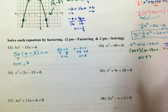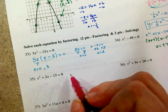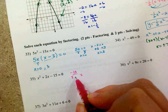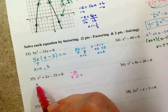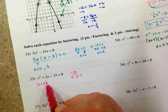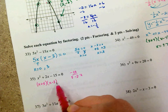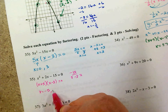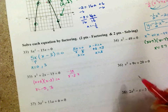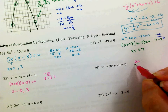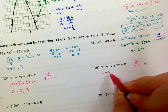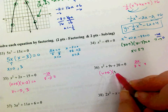For x² + 2x − 15, find factors of negative 15 that add to 2: those are 5 and negative 3. So (x + 5)(x − 3) = 0, giving x = negative 5 and x = positive 3. For v² + 9v + 20, factors of 20 that add to 9 are 5 and 4. So (v + 5)(v + 4) = 0, giving v = negative 5 and v = negative 4.